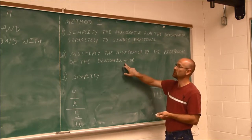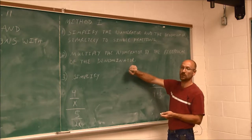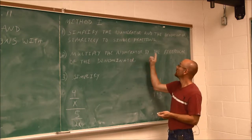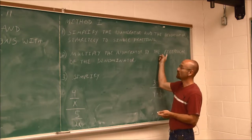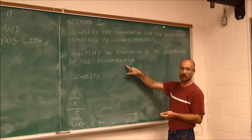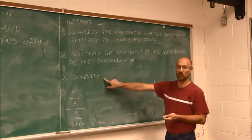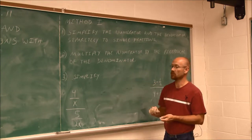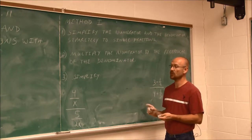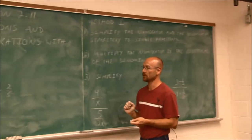Step 2: then we just do what we've always known to do with fractions — multiply by the reciprocal of the denominator. And of course, we always simplify our fractions. So let's go back to this first example.